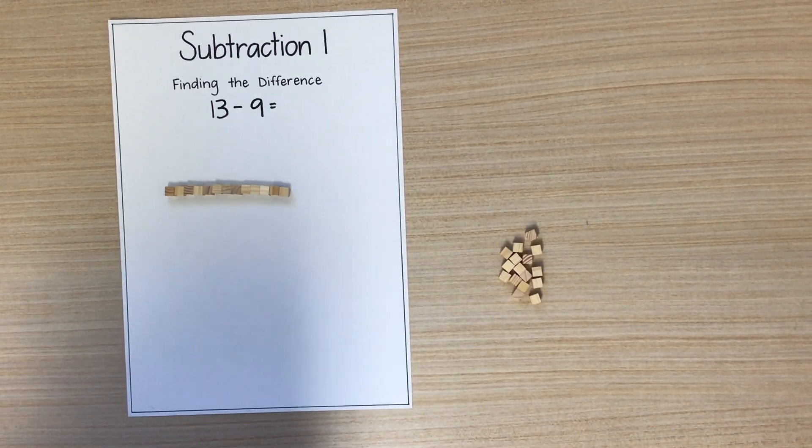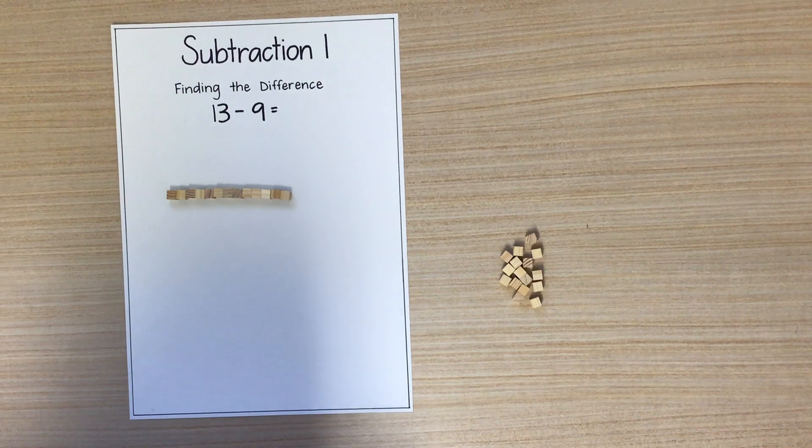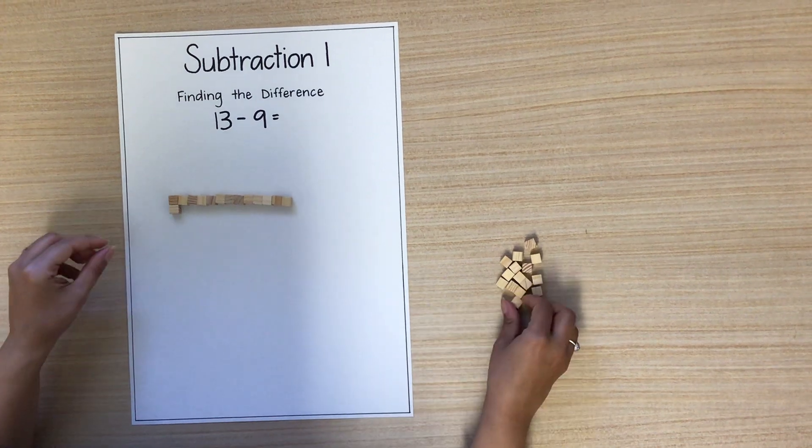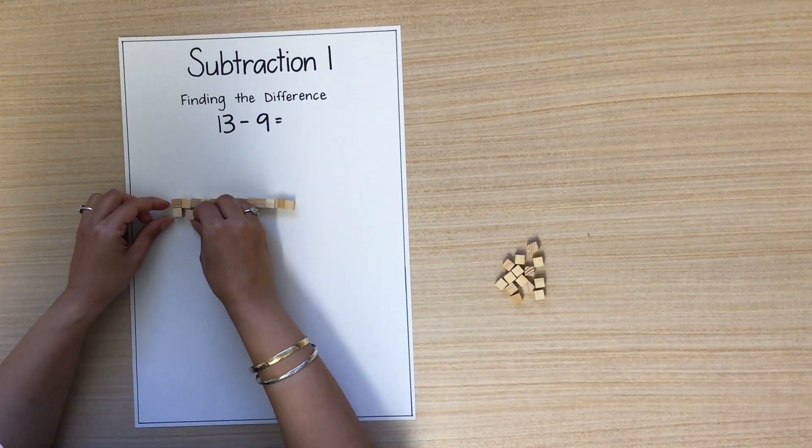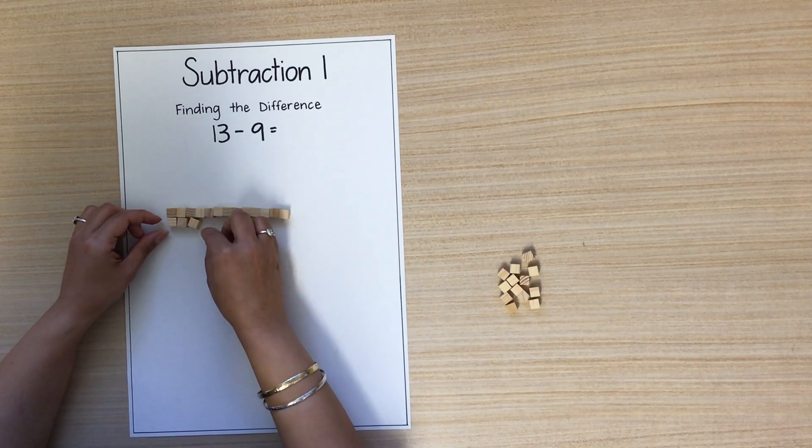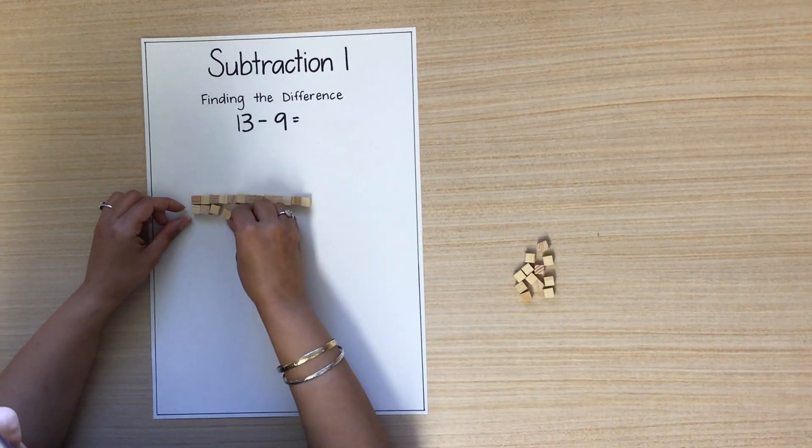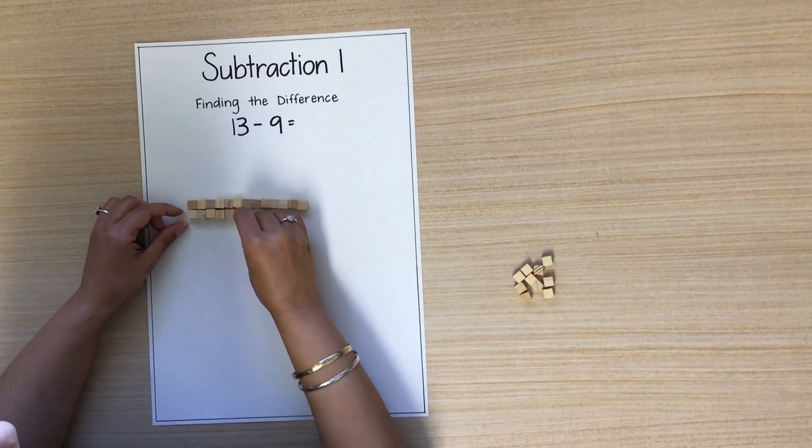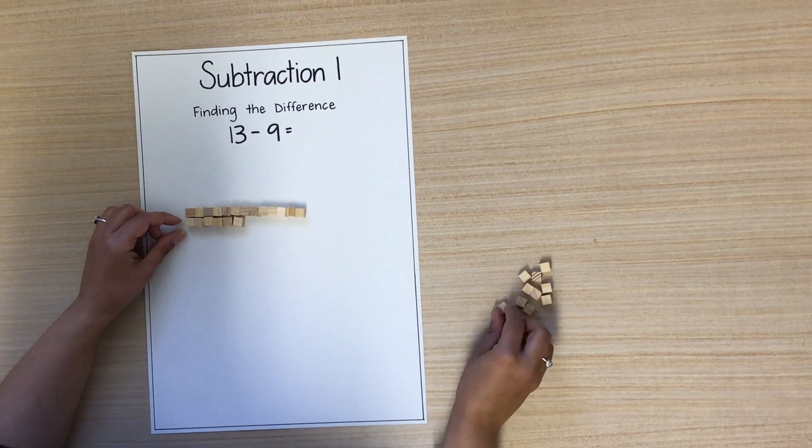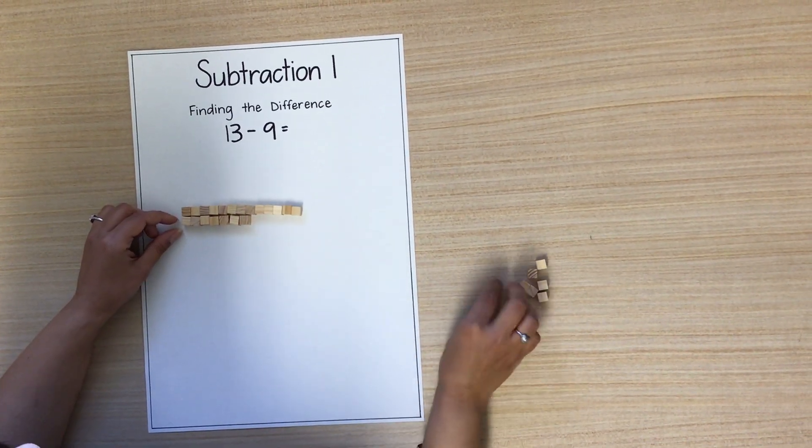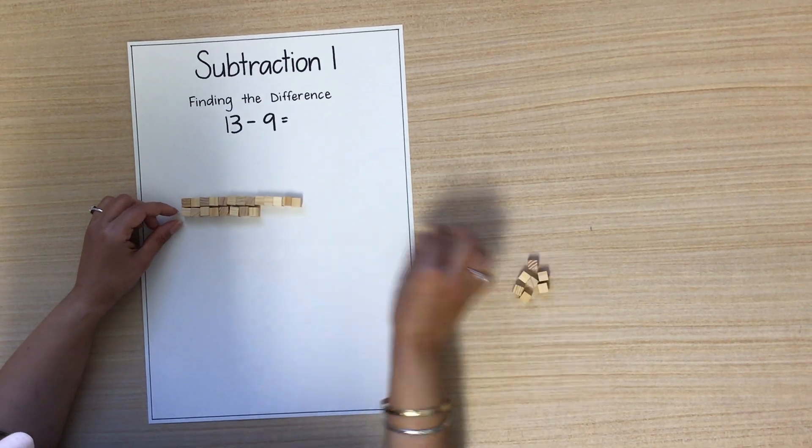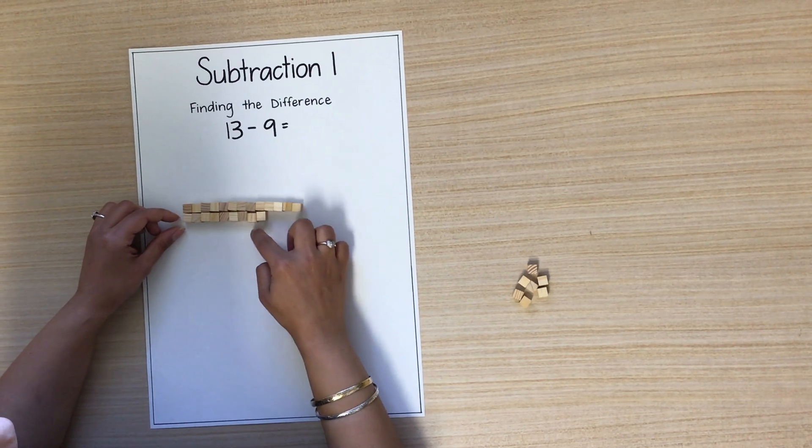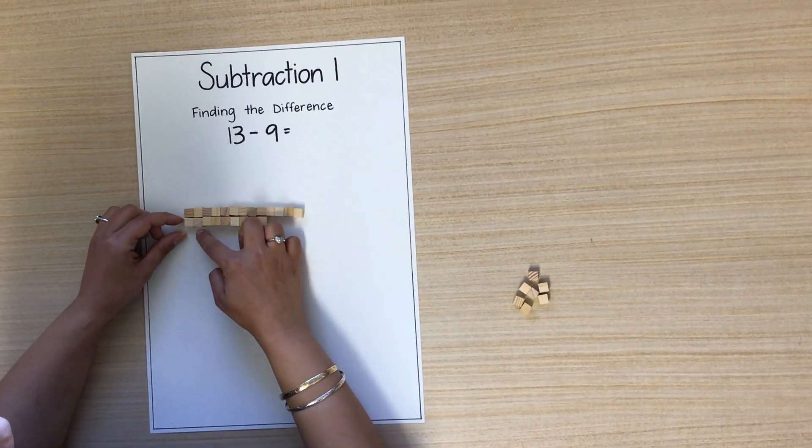Next we need to get nine more MAB blocks and place them under the 13 MAB blocks. So I'm just going to make sure that they are touching so that I can see the difference.